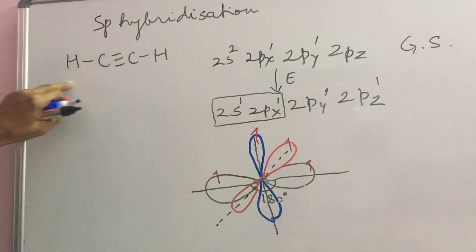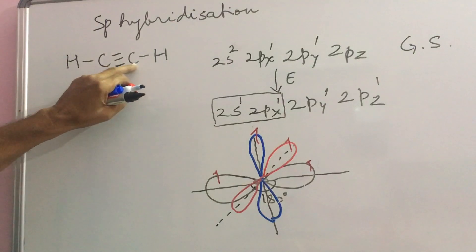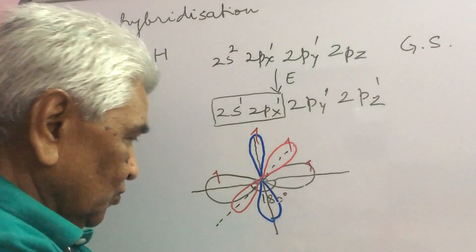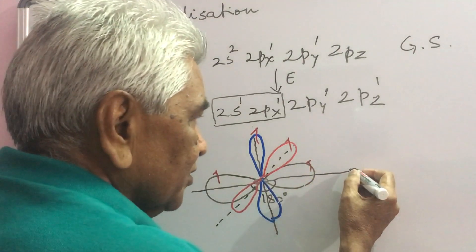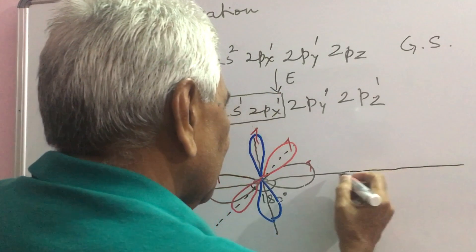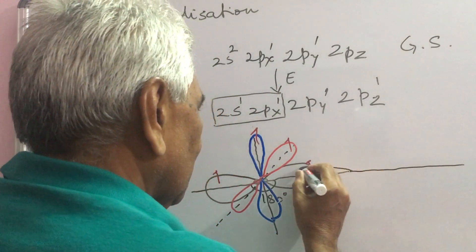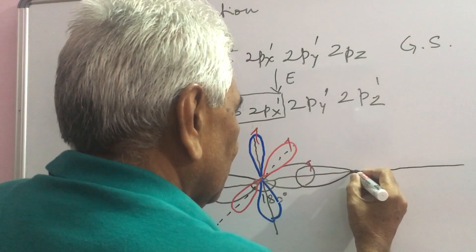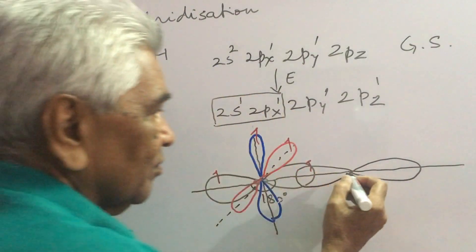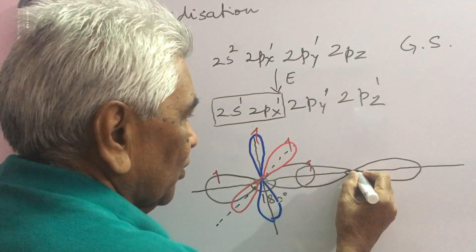Now, in the formation of bonds in acetylene for example, we require two such SP hybridized carbon atoms. So, another carbon atom, again SP hybridized having two SP orbitals.